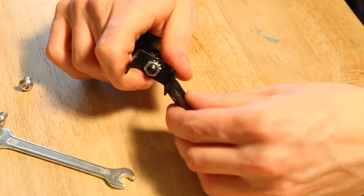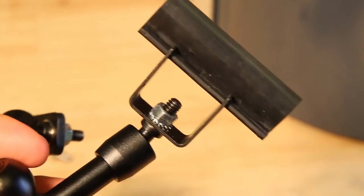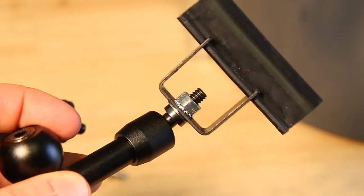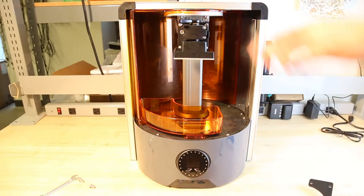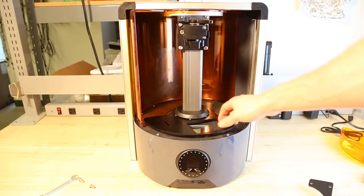We'll slide the rubber wiper blade onto the u-shaped holder and now we're ready to mount the assembly on our Ember. First we'll remove things that we don't need to give us more room: the build head, the resin tray, and the spill guard.